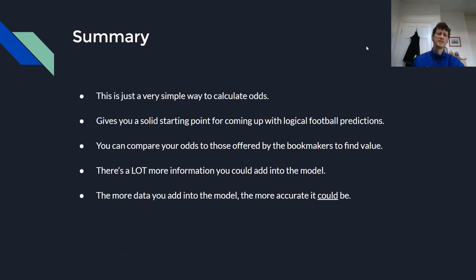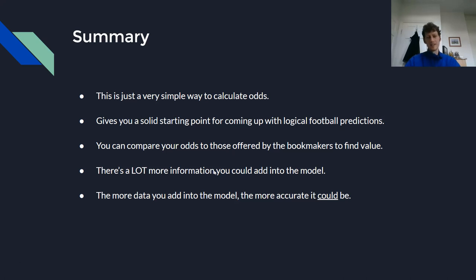In summary, this is just a very simple way to calculate odds. You wouldn't expect this to be working phenomenally well, but it is a very good solid starting point for coming up with logical football predictions, and it does enable you to compare your odds to those offered by the bookmakers in order to find value. There's a lot more information you could add into the model — the more data you add, the more accurate it could be. Players get injured, there's weather, there are a lot of different factors you'd need to add to make it more accurate. Hopefully this quick tutorial helped give you a quick introduction to compiling your own odds. If you've got any questions, leave a comment below and make sure you join the Odds Tribe members group, where we share this data with you every day so you don't have to do any of the calculations yourself.